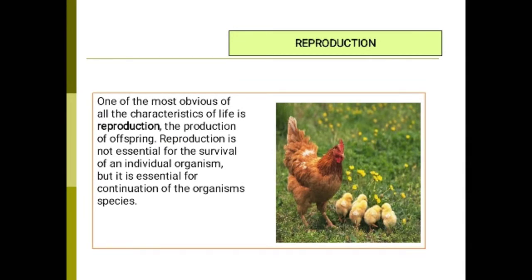Reproduction: one of the most obvious of all the characteristics of life is reproduction — the production of offspring. Reproduction is not essential for the survival of an individual organism, but it is essential for the continuation of the organism's species.